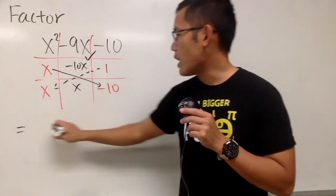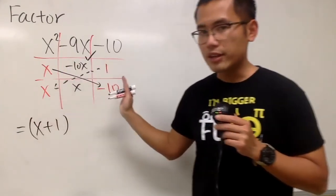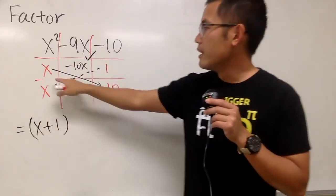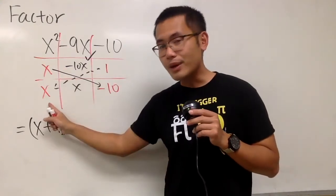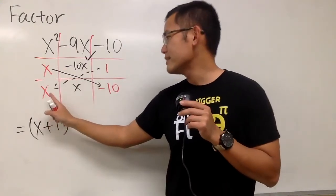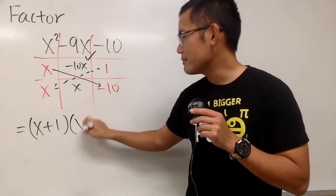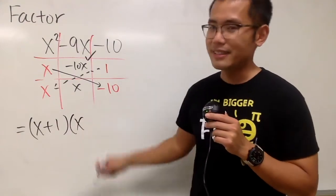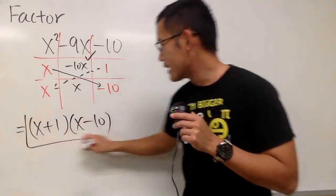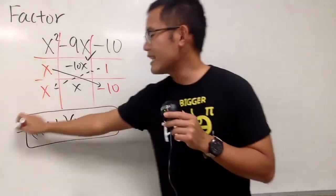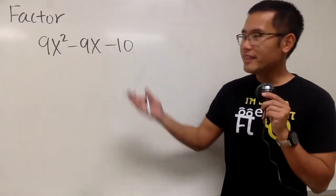So finally, we can write down the answer. Going across: x plus 1, and then the second one is x minus 10. So the answer is x plus 1 times x minus 10.